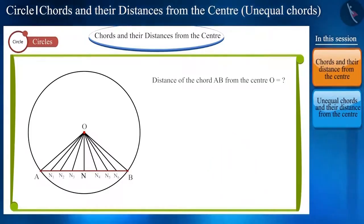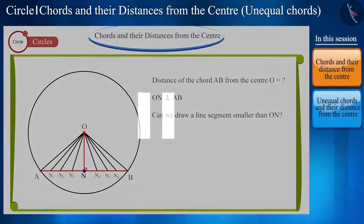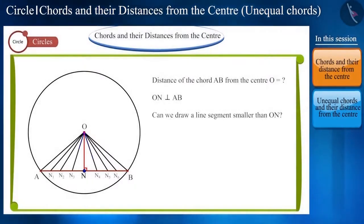Friends, we can see that, of all these line segments, perpendicular ON drawn from the center O to chord AB intersecting AB at point N has the shortest length. Can we draw a smaller line segment than ON? You can pause the video and try. You will see that we cannot draw a line segment smaller than perpendicular ON here.